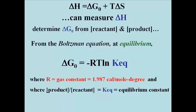We can measure the enthalpy change, or delta H, directly using the calorimeter. We can determine the standard free energy change, or delta G0, indirectly, by knowing the equilibrium concentrations of reactants and products in a chemical reaction, and using the Boltzmann equation shown here, where R is the gas constant, and T is the standard temperature, and the Keq is the equilibrium constant for the reaction.